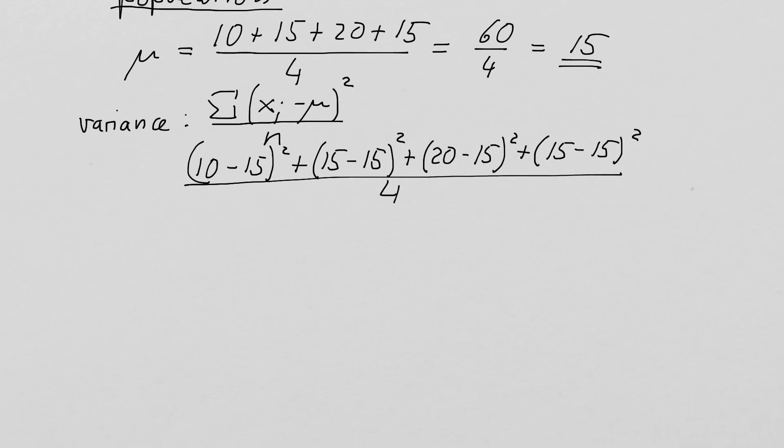So let's just quickly do that. 10 minus 15, that gives us negative 5 squared, plus 15 minus 15, that gives us 0 squared, plus 20 minus 15, that gives us positive 5 squared, plus 15 minus 15, that gives us again 0 squared, and we divide that by 4.